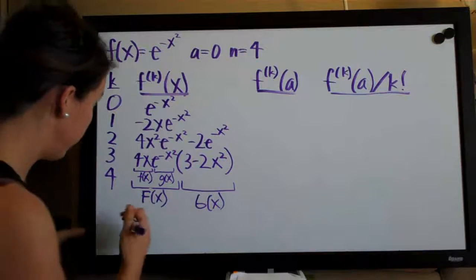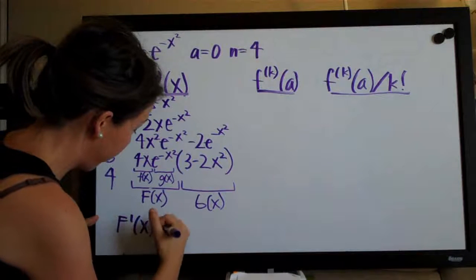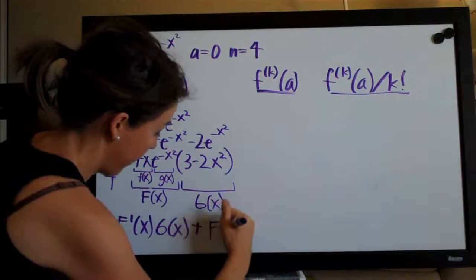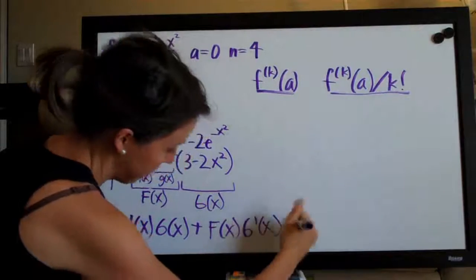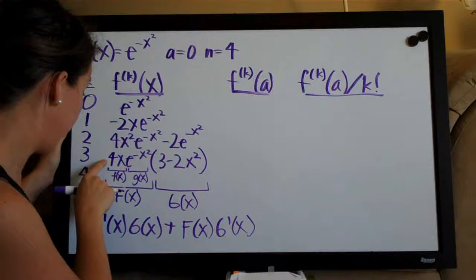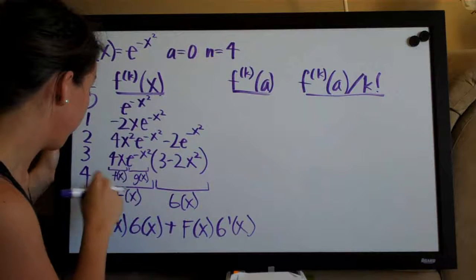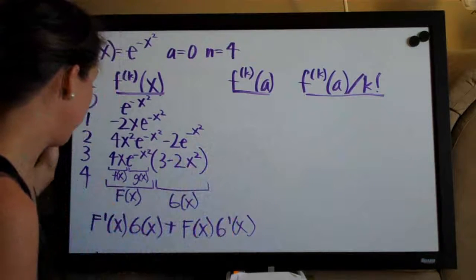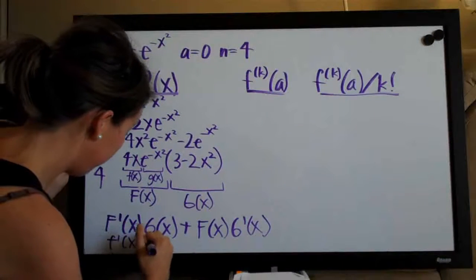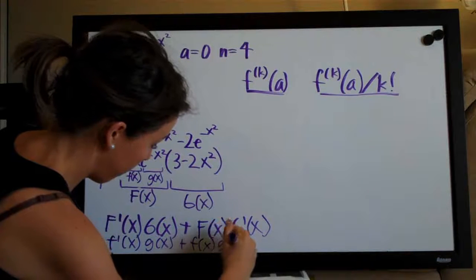We will need to first take the derivative, looking at capital F'(x) and capital G'(x). Let's just write out our formula: F'(x)·G(x) plus F(x)·G'(x). We need the derivative of 4x·e^(-x²), and in order to take that we have to use the product rule again. So the derivative of 4x·e^(-x²): let's write out f'(x)·g(x) plus f(x)·g'(x). Writing these out will help us keep this straight.